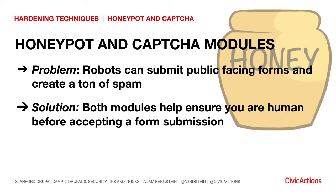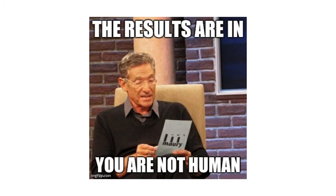We have a couple of hardening techniques around bots. One of the really annoying things is that a robot can just spam the living daylights out of your site — creating accounts or filling out your contact form. The honeypot and CAPTCHA modules provide tools for locking that down. Robots have to go through extra steps to understand what your form is doing, and if they fill out the honeypot, they're not allowed to submit it.